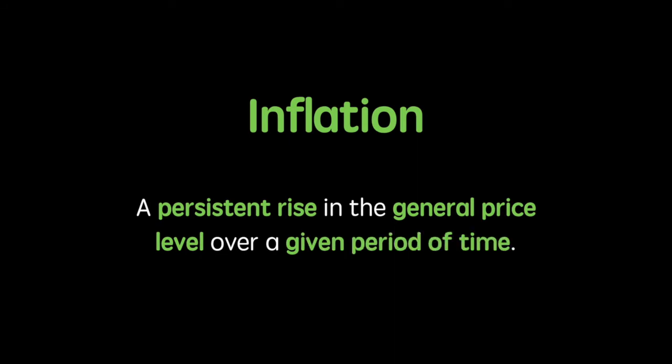Inflation is a persistent rise in the price level over a given period of time. The key parts of this definition are in bold. The increase in prices must be persistent. Also, it can be general, which means not all goods and services will become more expensive, but many will. The price level consists of the overall level of prices in an economy, which we'll explain further later in this series. Finally, as with most economic data, we measure inflation over a given period of time.